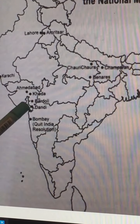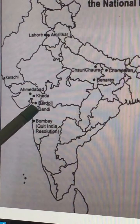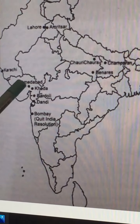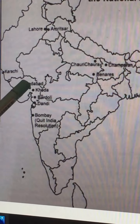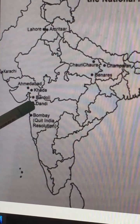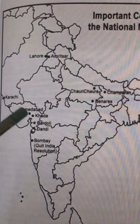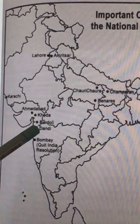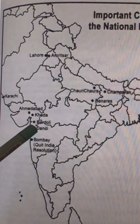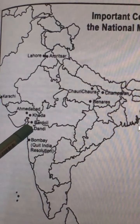Dandi is a place located on the southern coast of Gujarat, which is ideal for salt manufacturing. Gandhi led the Dandi March from Ahmedabad, that is Sabarmati Ashram, to Dandi — a distance of about 240 miles — along with 76 trusted volunteers. After reaching there, he violated the salt law by manufacturing salt. Dandi is located in Gujarat.